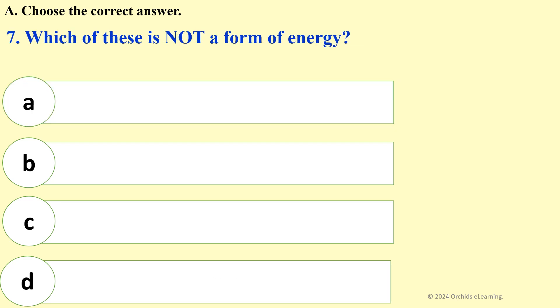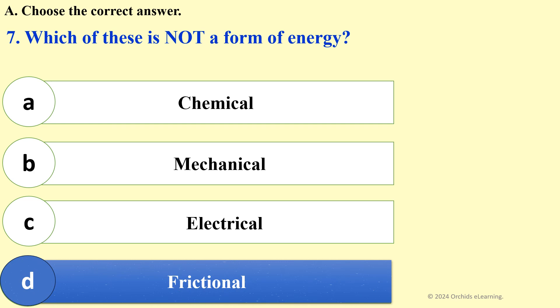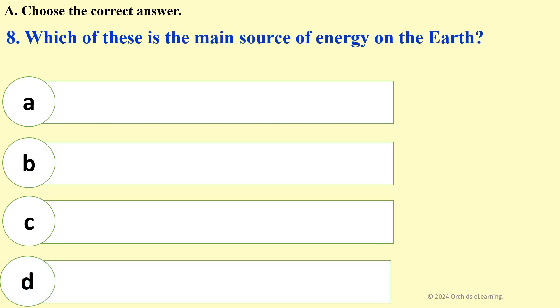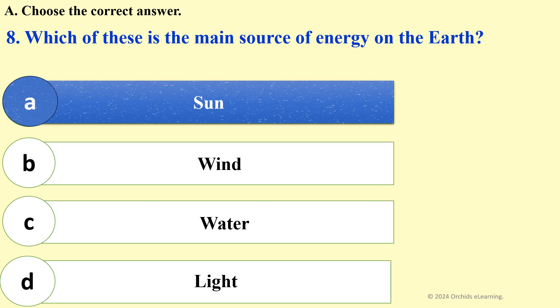Which of these is not a form of energy? D: frictional. Which of these is the main source of energy on the earth? A: sun.